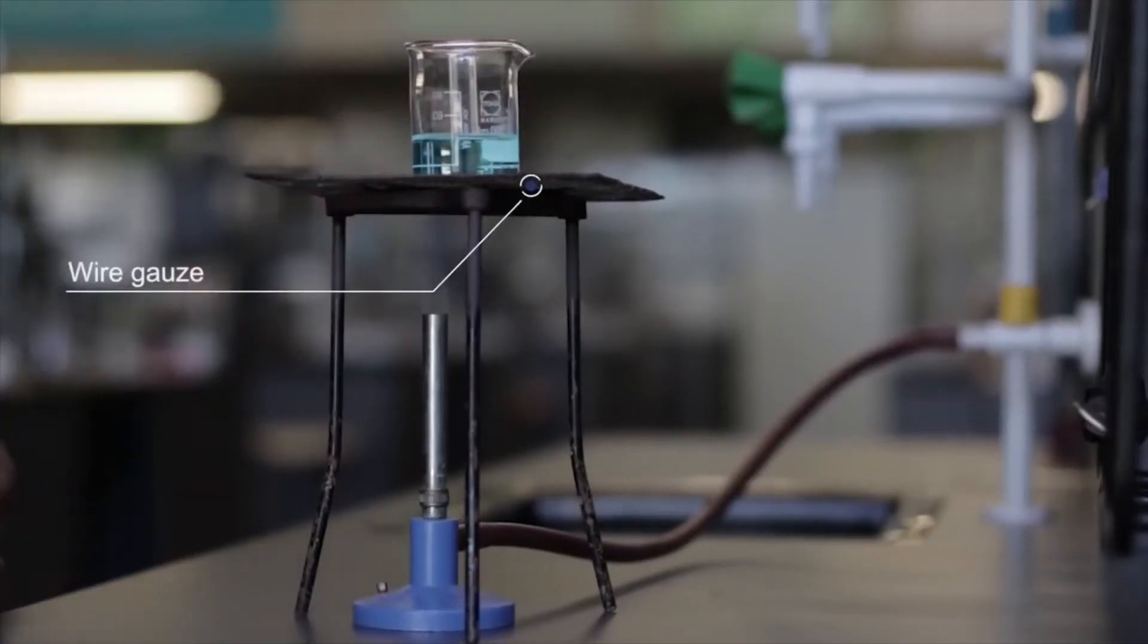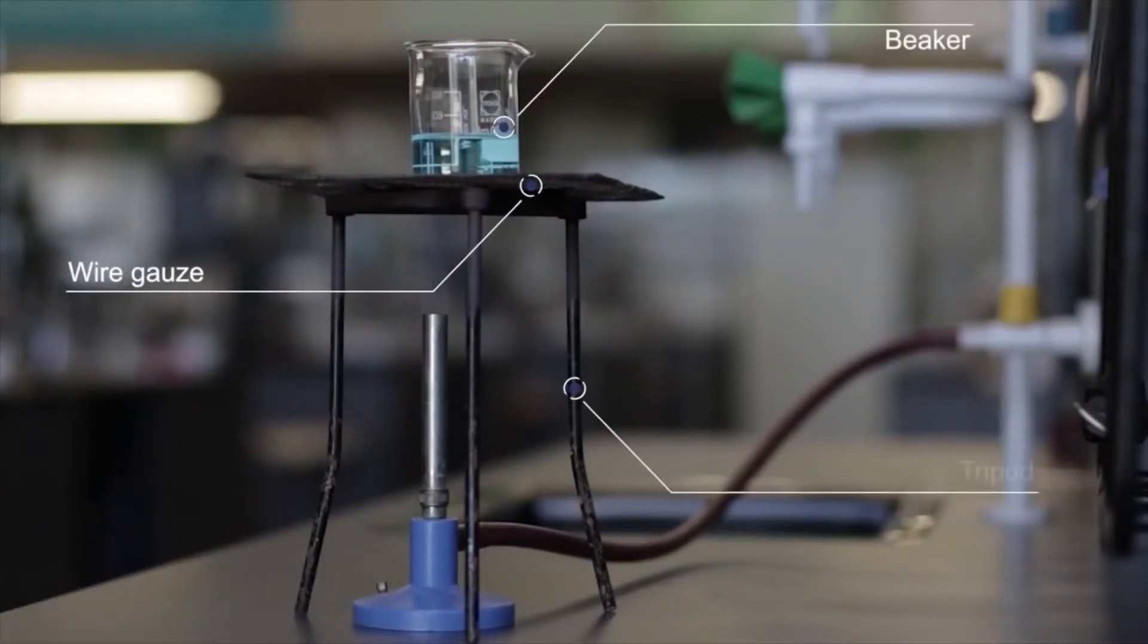Wire gauze is placed between the beaker and the tripod to support the beaker while heating the solution with a Bunsen burner.